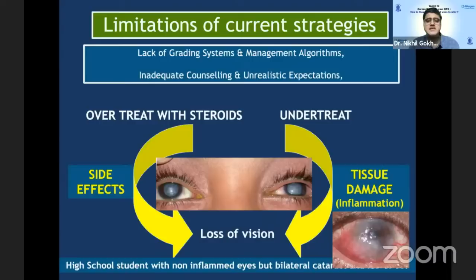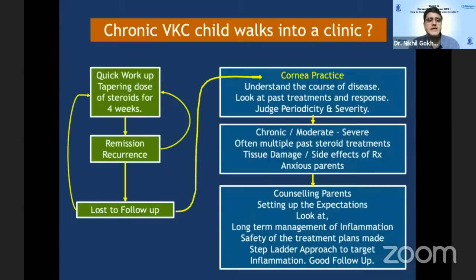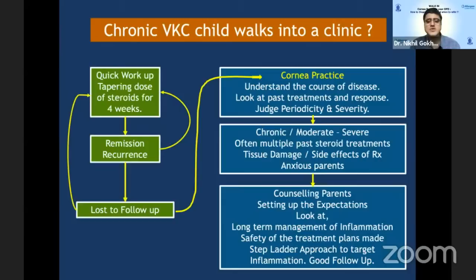The limitations we have presently are that we don't have proper grading systems and management algorithms, and patients may have unrealistic expectations due to inadequate counseling. The problem is that if we over-treat patients, we may have side effects, whereas if we under-treat and are not adequately controlling inflammation, we will have tissue damage. We need to evaluate what type of disease we are seeing, how severe it is, how many recurrences there are, and based on that counsel the patient, set expectations, and look at how to manage inflammation long-term safely.